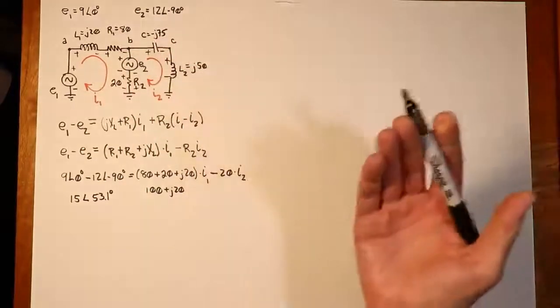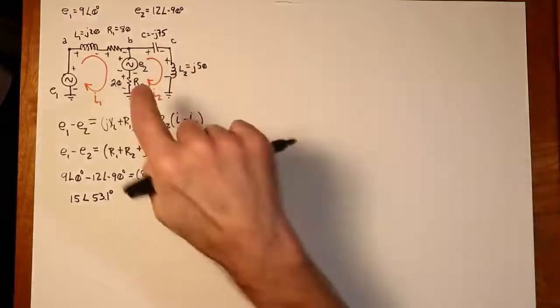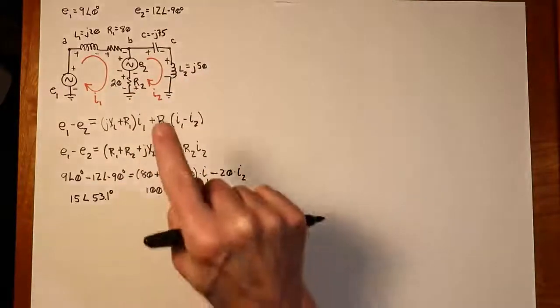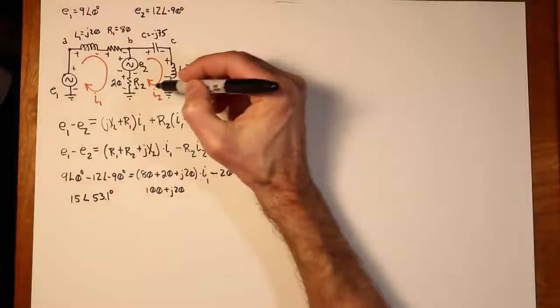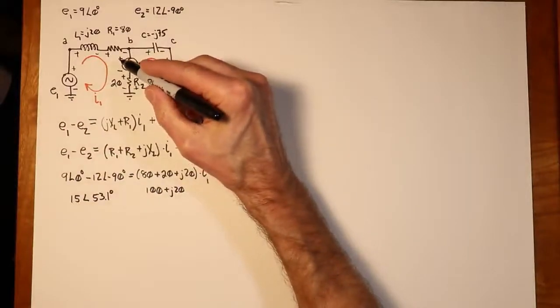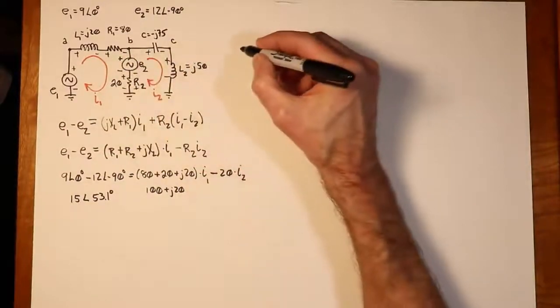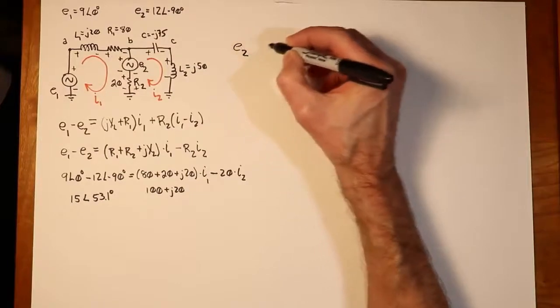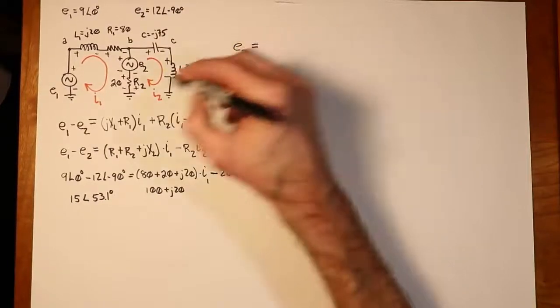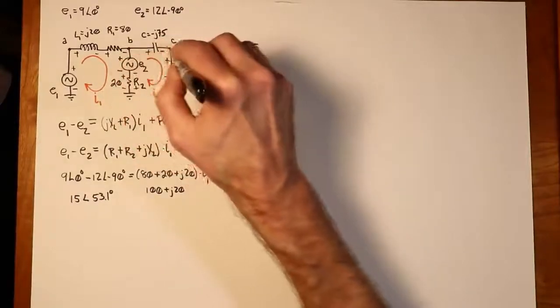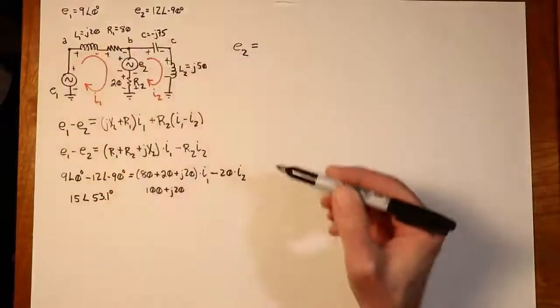So going around that loop, the constant value that we see, the E2 value, shows up positive. Because again, the current's going in the minus and out the plus. So we just show that up here is just a plain old positive E2. Now notice how that in this loop, E2 is positive, but in the first loop, E2 showed up negative.